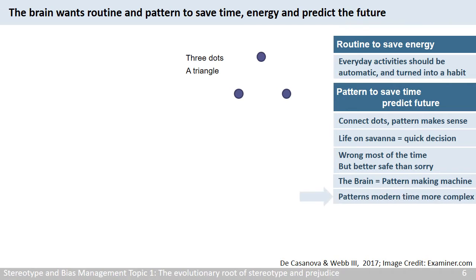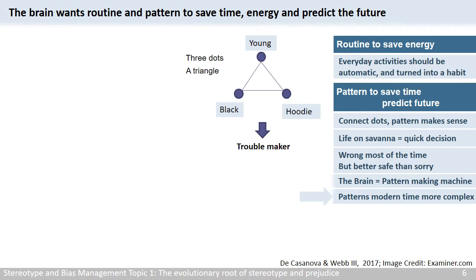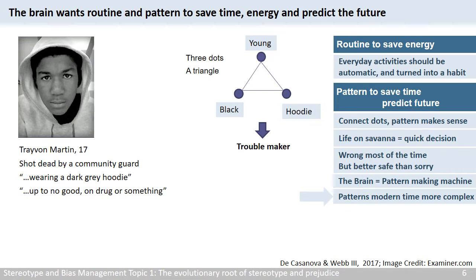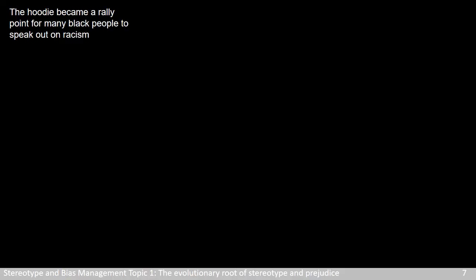But the patterns in modern times are much more complex. The three dots could be: young, black, and wearing a hoodie — and the triangle pattern that emerges is 'troublemaker.' This seems to be the case with a boy in the U.S. named Trayvon Martin. He was shot dead by a community guard. The description given to the police before the shooting was that he was wearing a dark gray hoodie, and the guard thought he was up to no good — on drugs or something. The hoodie became a rally point for many Black people to speak out on racism, especially how nonverbal behaviors have become automatic patterns for quick judgment.